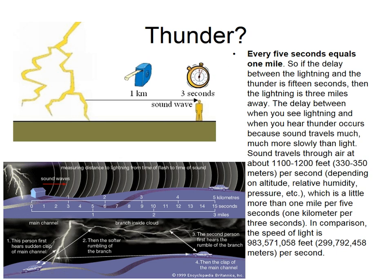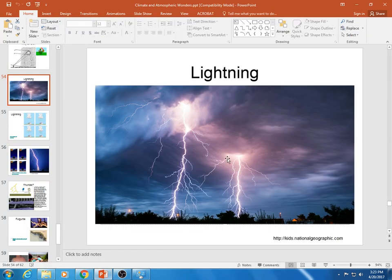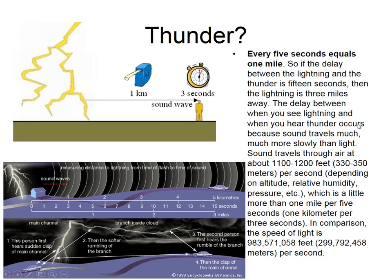Moving on — how does lightning cause thunder? Lightning is really, really hot: 45,000 to 50,000 degrees Fahrenheit. That hot plasma heats up the air next to the lightning bolt, and that hot air expands. If it expands faster than the speed of sound, it causes thunder. So thunder is just a shockwave — the air expanding faster than the speed of sound.